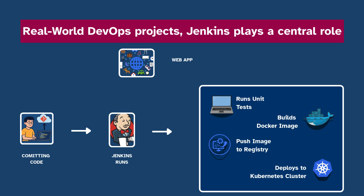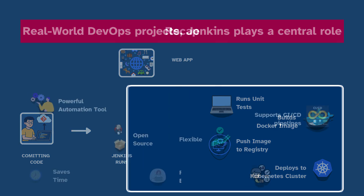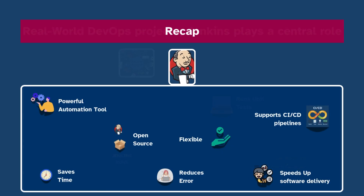So let's recap: Jenkins is a powerful automation tool, it supports CI/CD pipelines, it's open source, flexible, and used by teams all over the world. It saves time, reduces errors, and speeds up software delivery.